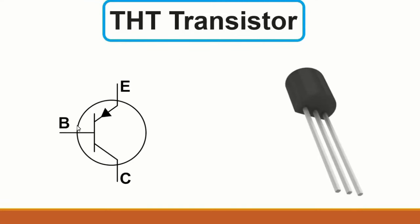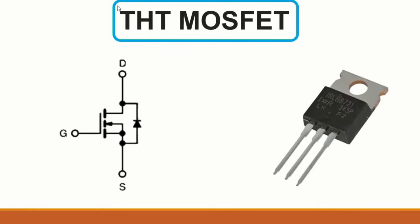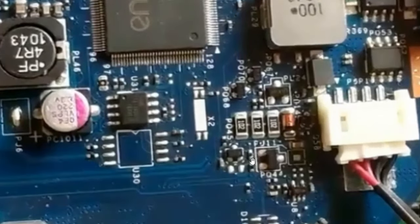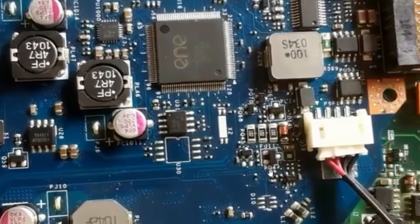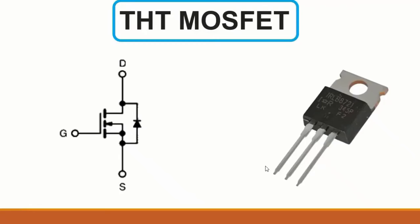Then we have the THT MOSFET - it has through-hole terminals. On the motherboard, this is an SMD MOSFET with 'PQ' reference. The through-hole MOSFET is called a THT MOSFET. For each MOSFET symbol, we have gate, drain, and source. When the gate is activated, the signal passes from source to drain.